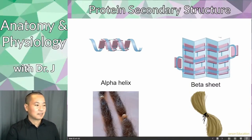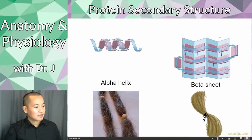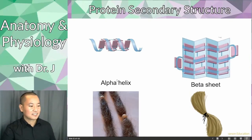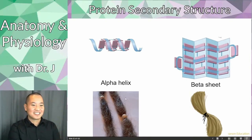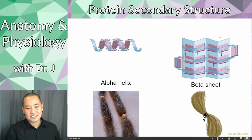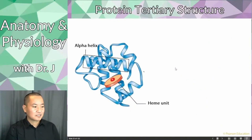The secondary structure of a protein involves taking those long polypeptide chains — all those amino acids linked together — and folding or twisting them into shapes. Here we have an alpha helix, where the amino acid chain is rolled into a spiral — kind of like dreadlocks rolling hair into a bigger structure. There is also a beta sheet, another example of secondary structure folding from a single polypeptide strand.